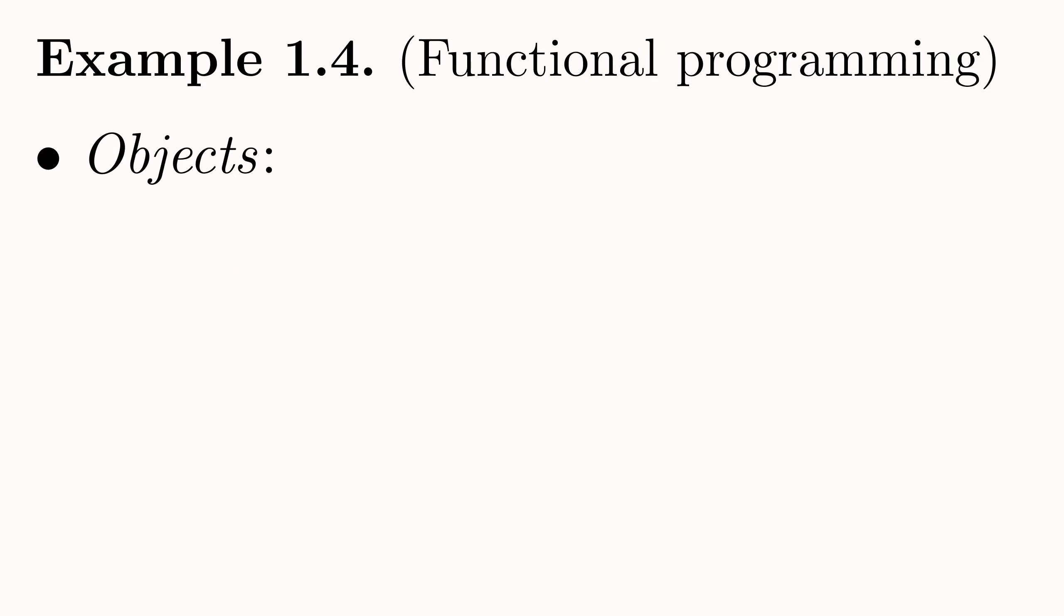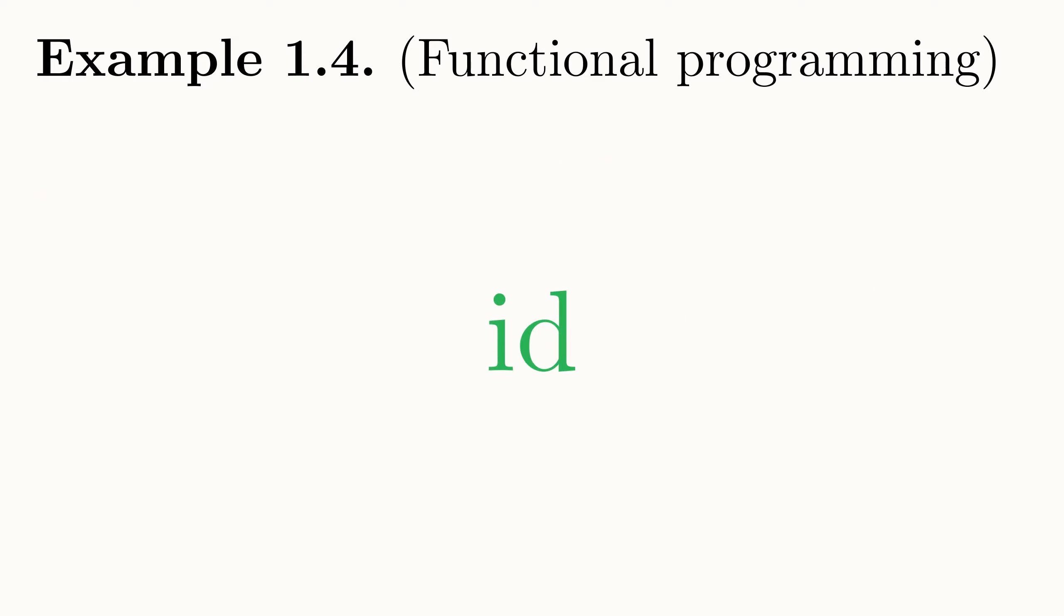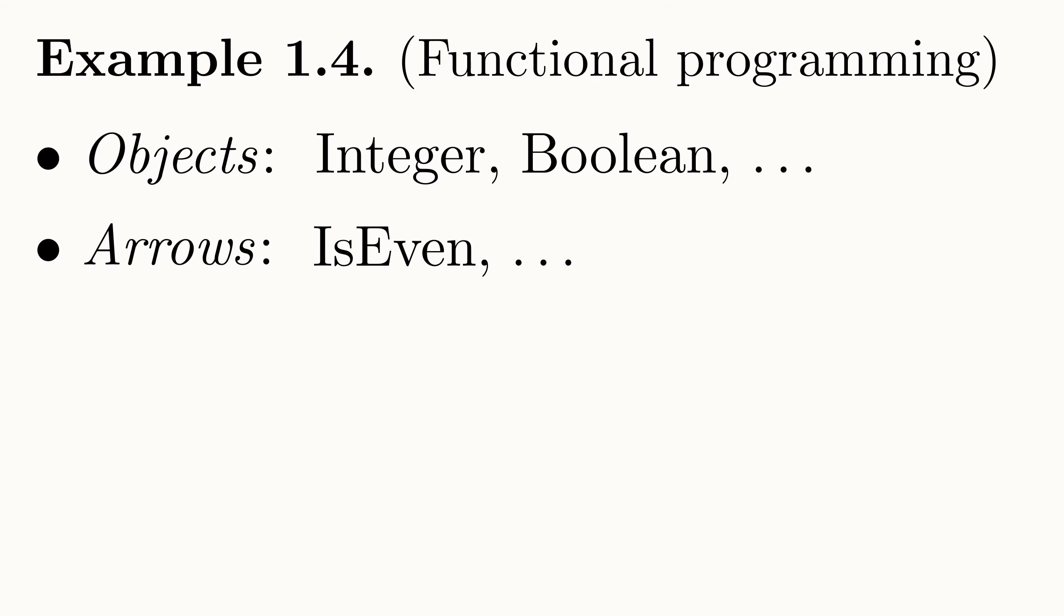Our objects are the data types of the language and the arrows are the functions between them. The composition of any two functions f from a to b and g from b to c is defined in a similar fashion as in the category Set. We apply the function g to the output of the function f. The identity function for a data type is simply the function that returns its input for any value in that data type. So now we have defined a category associated to a functional programming language.